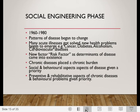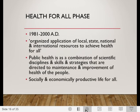Preventive and rehabilitative aspects of chronic diseases and behavioural problems were given priority. The next phase is health for all by 2000, where after these phases it was recognized that an organized application of local, state, national and international resources was needed to achieve health for all — whether a person is poor or rich, staying in the city or the village. Public health is a combination of scientific disciplines, skills and strategies directed to the maintenance and improvement of health of the people. The ultimate aim is a socially and economically productive life for all.